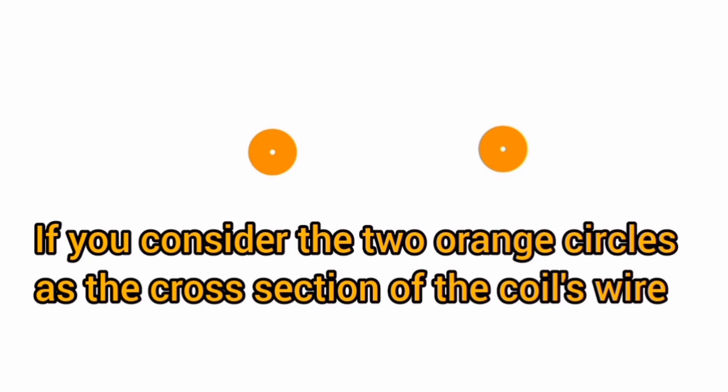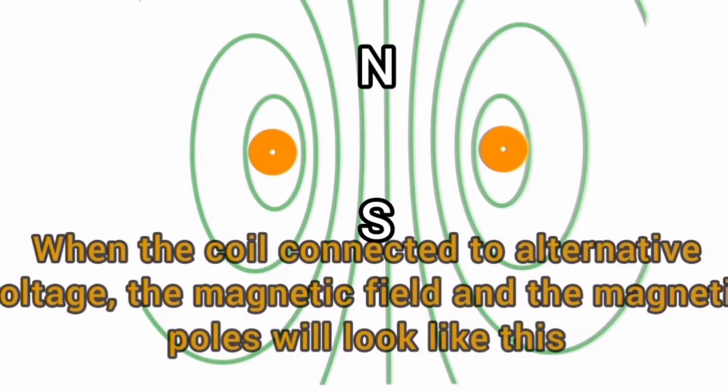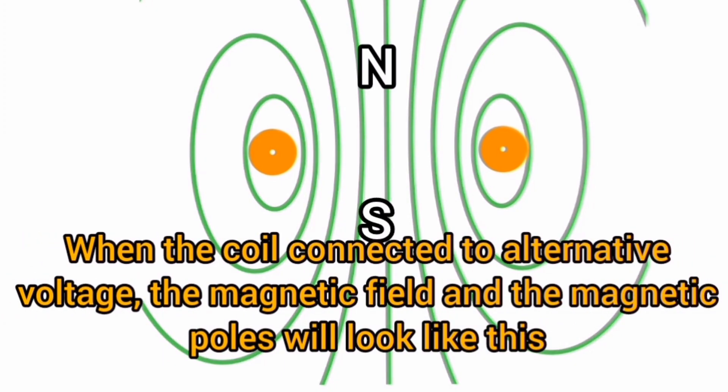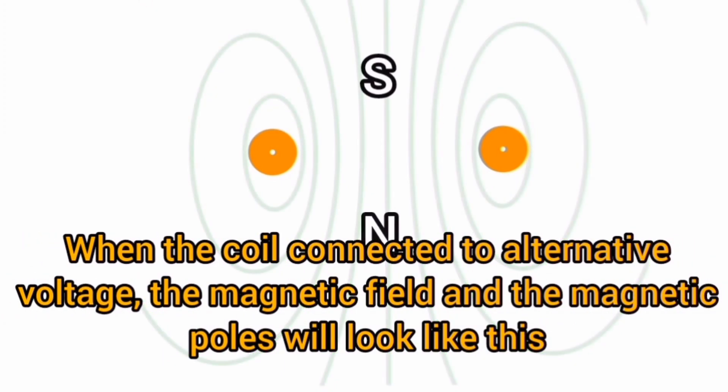If you consider the two orange circles as the cross section of the coil's wire, when the coil is connected to alternating voltage, the magnetic field and the magnetic poles will look like this.